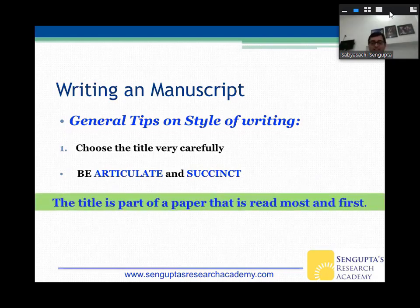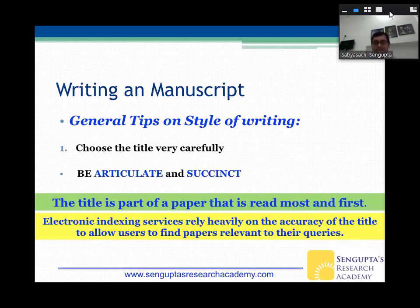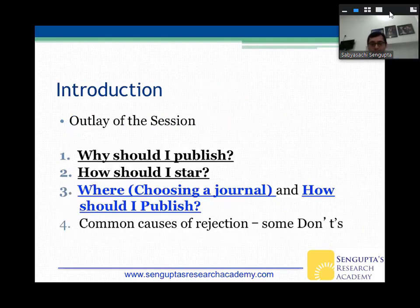Always be articulate and succinct. The title is very important — it's the part of the paper that is read most and first. If you receive a table of contents email, what attracts your attention is the title. Electronic indexing services like PubMed and Scopus also rely heavily on the accuracy of the title to allow users to find papers relevant to their queries.